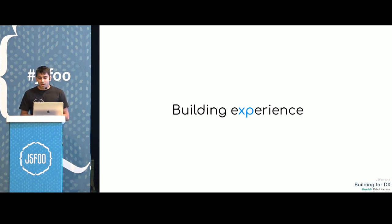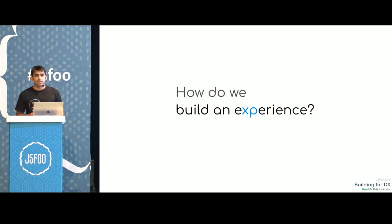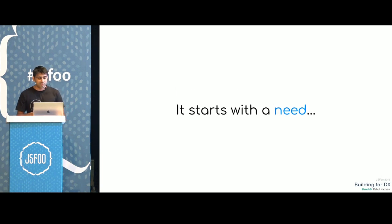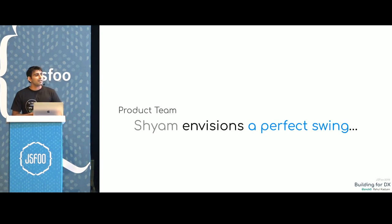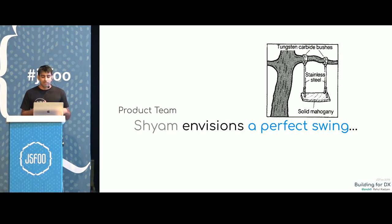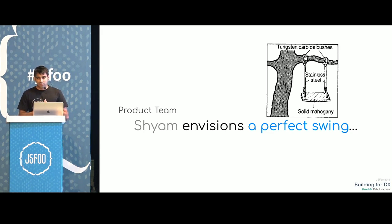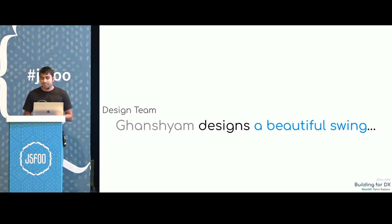How do we actually build applications and experiences? Let's take a highly contrived example. We start with a need, a requirement, a gap which our application can fill. Say a user needs a swing. The product team brainstorms and comes up with a perfect swing — thinking of everything: security, robustness, experience — and had a vision of what a swing would look like. They hand it over to the design team, who spend days designing a pleasing, comfortable experience. It's beautiful.